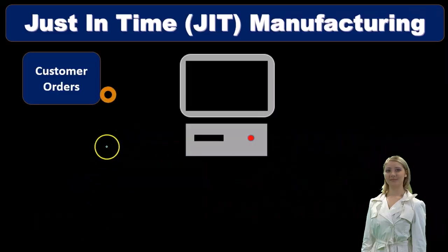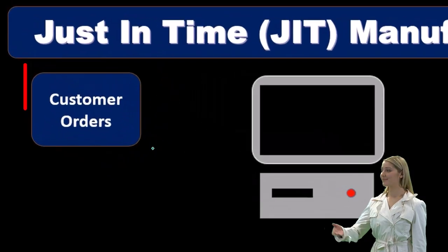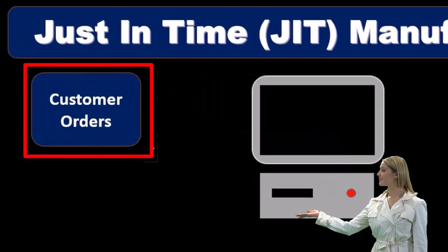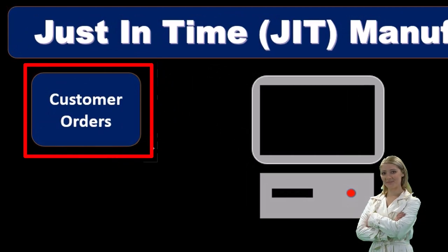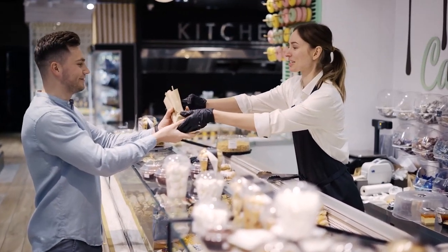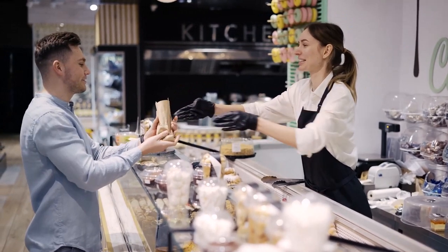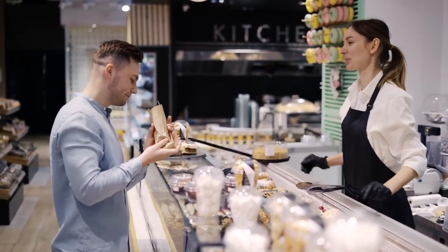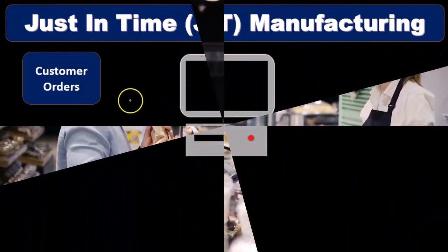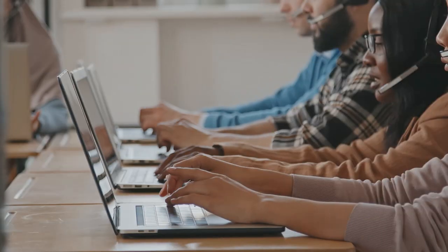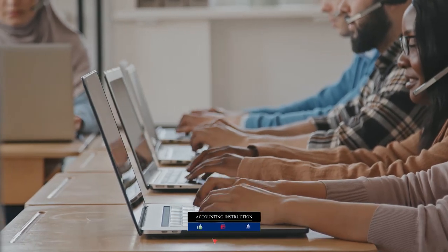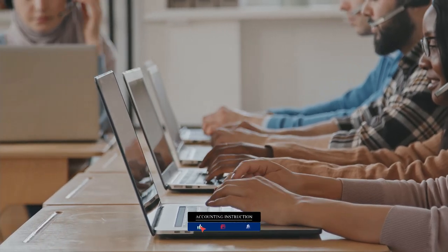We're going to start to put together the inventory after we get the order. In other words, we're going to get an order from the customer and then start to put together the inventory. For example, if we're a Dell computer and we're putting together computers, we're going to get the order for the computer before we start to assemble it.